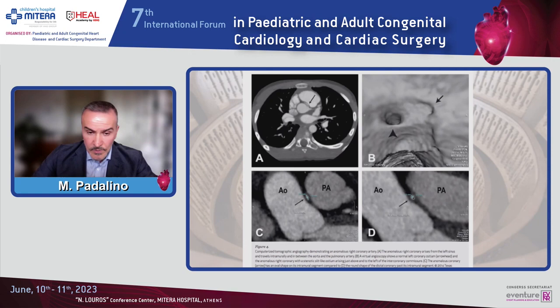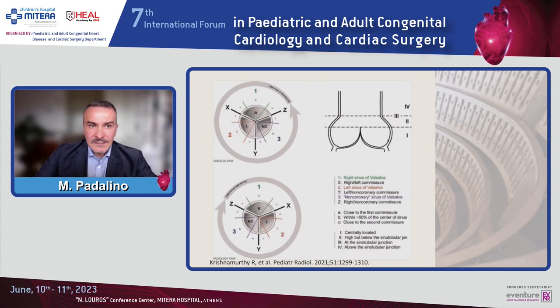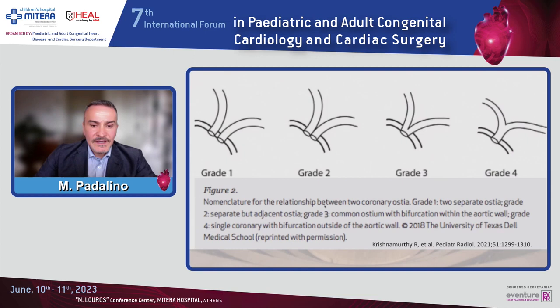It is very important to evaluate the location of the ostia — in which sinus, but also close to which commissure and at which height it is located. All these anatomical details characterize the high-risk anatomy for this kind of anomaly. The nomenclature for the different relations between the two coronary ostia is very important for evaluation of high-risk anatomy.